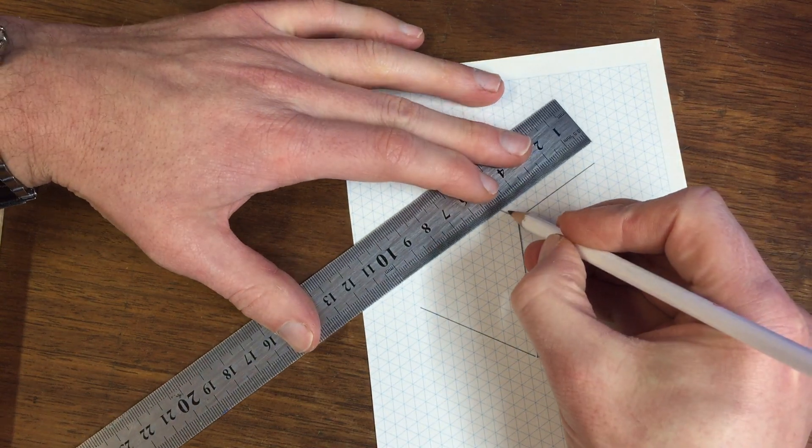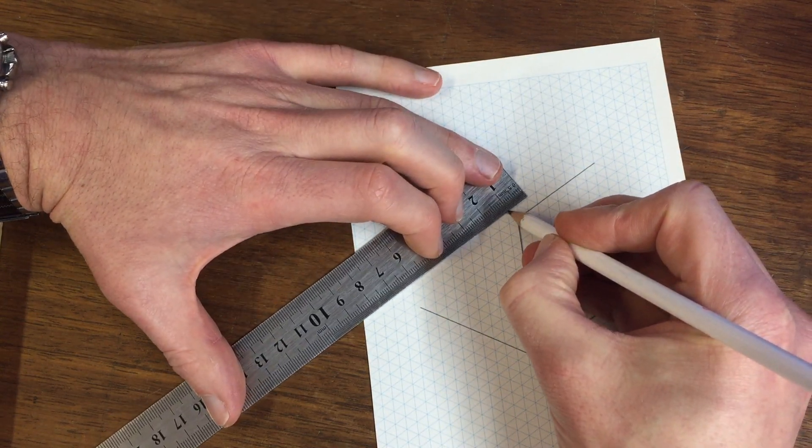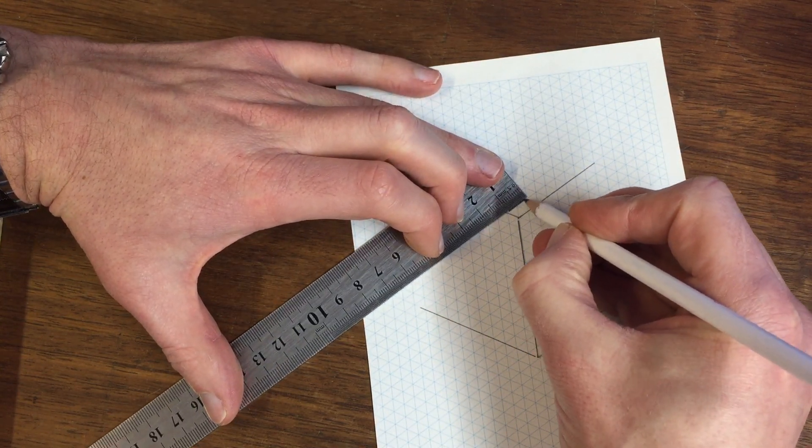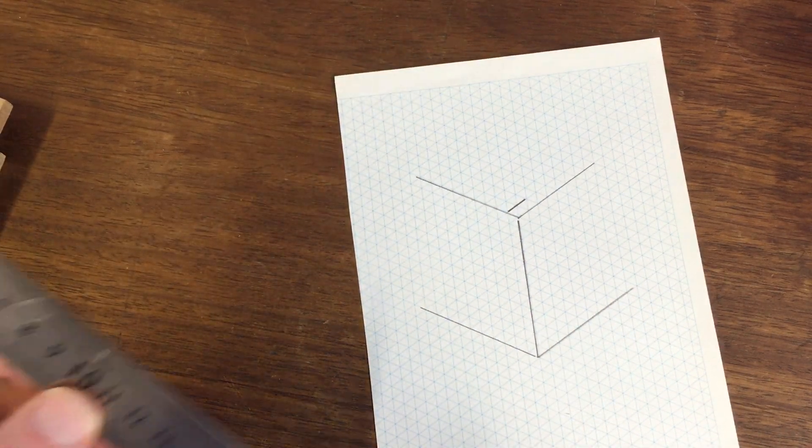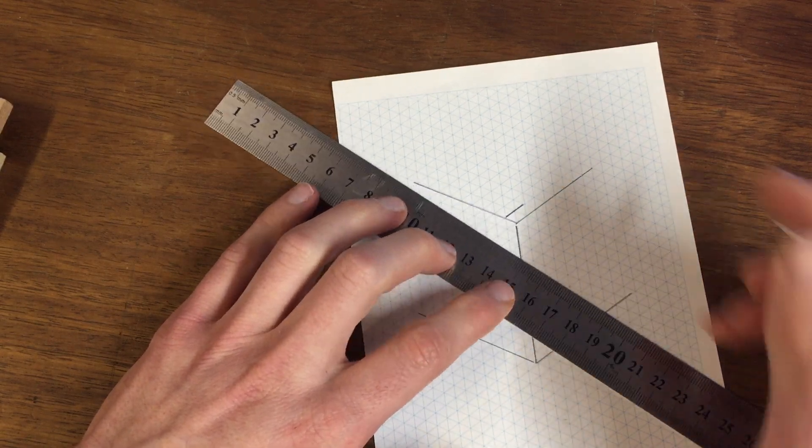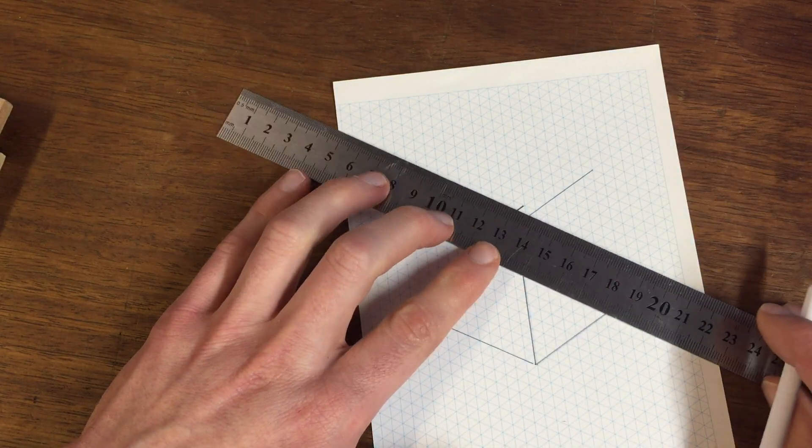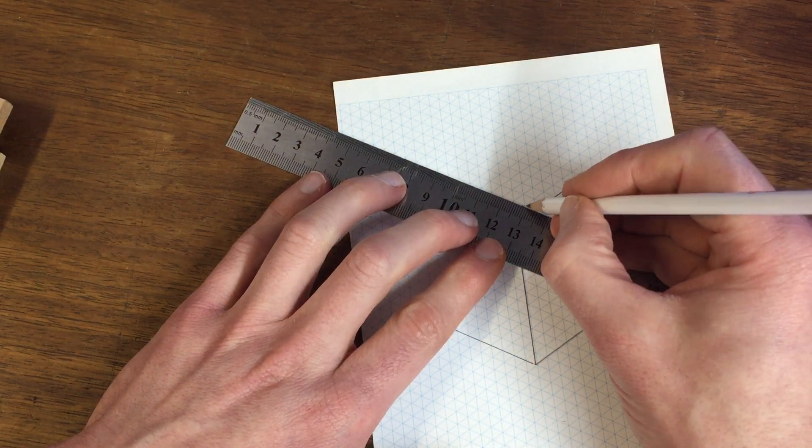To do that, I'm going to do a line here which is going to be one centimeter, that's two of these triangles. Then once that is done, I'm going to go from the top of this point back here. It doesn't really matter how long it is, probably about four centimeters.